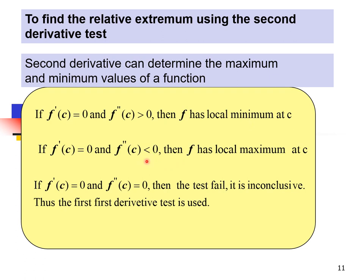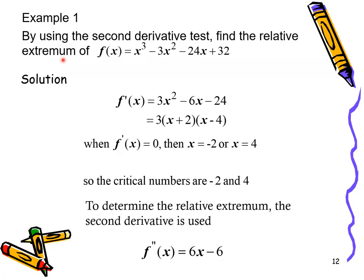Substitute x = 3 into f(x) to find y = −27, giving the point (3, −27) as a relative minimum. There is no relative maximum because at x = 0 the test was inconclusive and the first derivative test showed no extremum. So we only have one relative minimum. Now we move on to optimization problems.